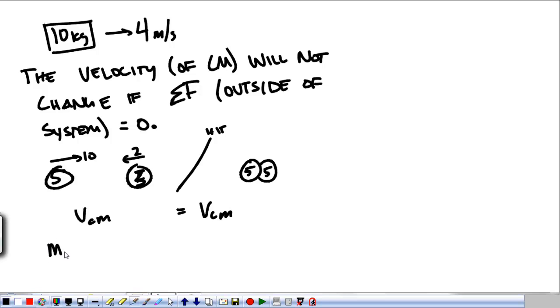Symbolically, that's M1V1 plus M2V2 over M1 plus M2 is equal to M1V1 plus M2V2 prime, afterwards, over M1 plus M2. These cross out, and we're left with this statement of equality.